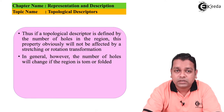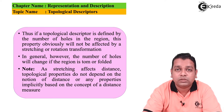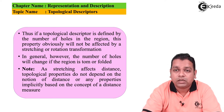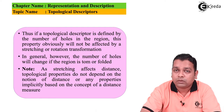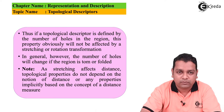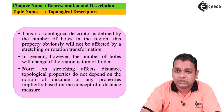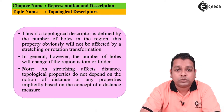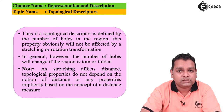Because of this representation, if a topological descriptor is defined by the number of holes in the region, this property will not be affected by stretching or rotation transformations. However, the number of holes will change if the region is torn or folded. Importantly, topological properties do not depend on the notion of distance or any properties implicitly based on the concept of a distance measure.